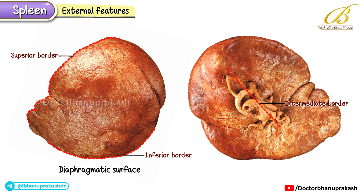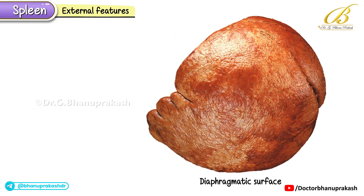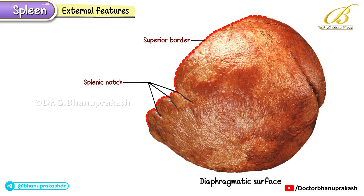In addition, it presents two main surfaces: the diaphragmatic surface, which we just mentioned, and the visceral surface, which faces the abdominal organs. A key landmark to note is the splenic notch on the superior border. These notches are a clue to the spleen's embryological origin — they show us that the spleen develops from the fusion of several small masses of lymphoid tissue, meaning its development is lobulated.